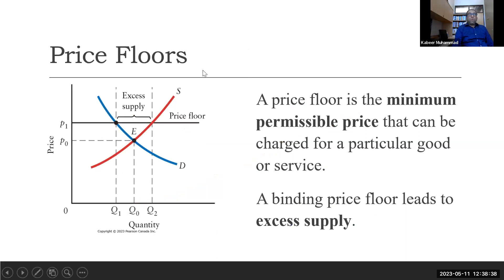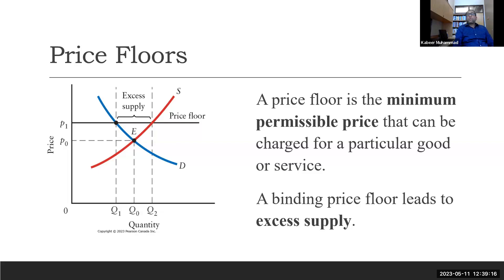If the government sets a minimum price, that's what we call a price floor — the minimum permissible price allowed under government regulation for a particular good or service. If the equilibrium price is above the floor price, it is not binding. But a binding floor price — set above the equilibrium — leads to excess supply, because at that price there is more supply and less demand.